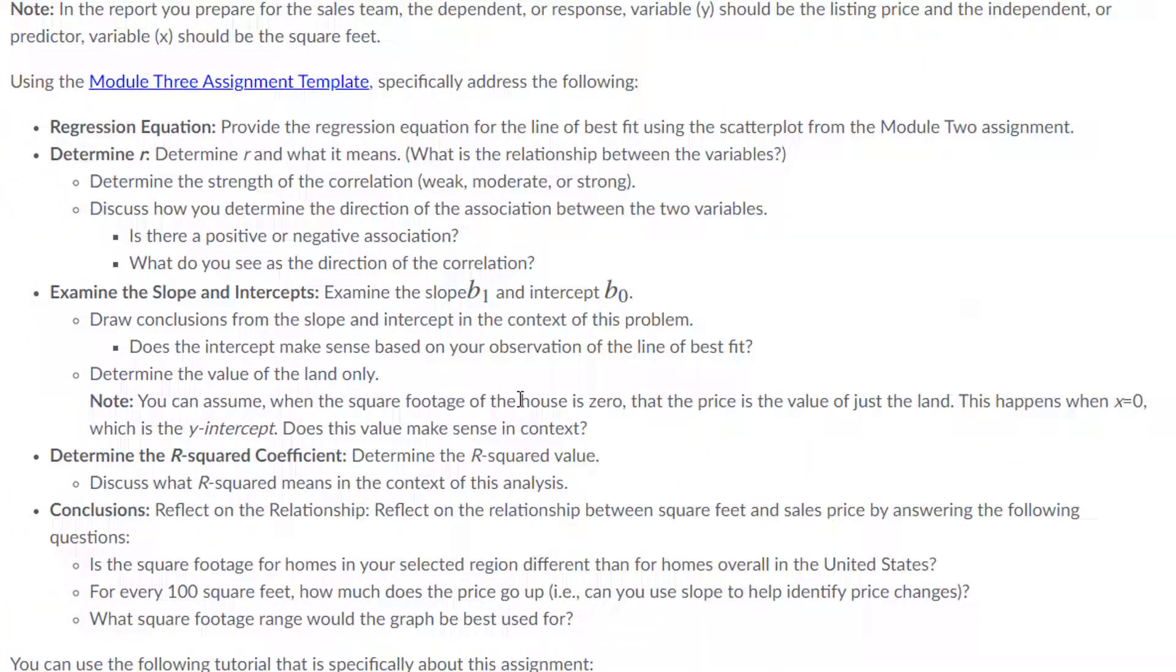Going back to this, it says to determine the value of the land only. There were no listings that were land only. It's impossible for us to use this model to explain what land only would be. So that's not something that we can do. It says that the price, if the house is zero, the price value is the land. This is not true. And I disagree completely. And so I don't want you to interpret that as the value of land. That's me. And I'm going to stand by that.